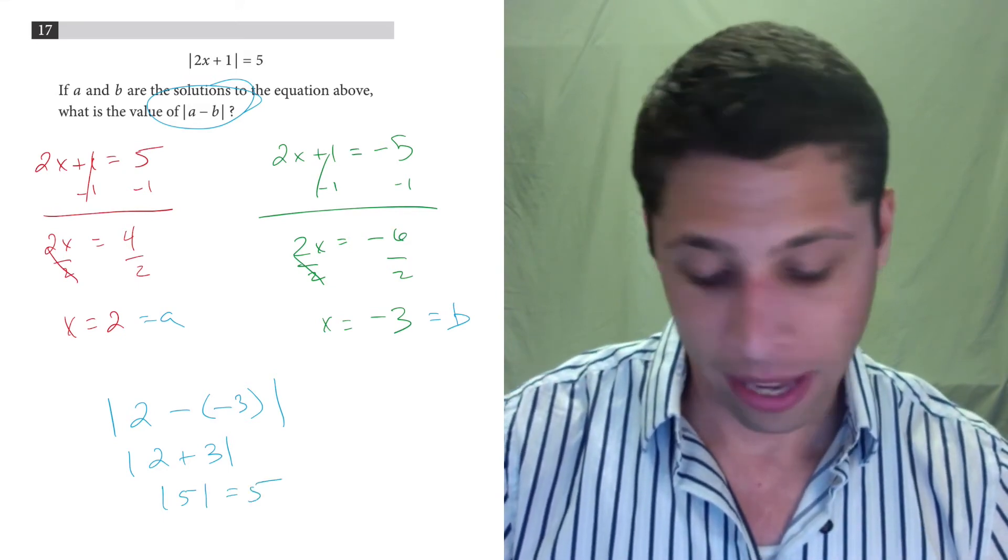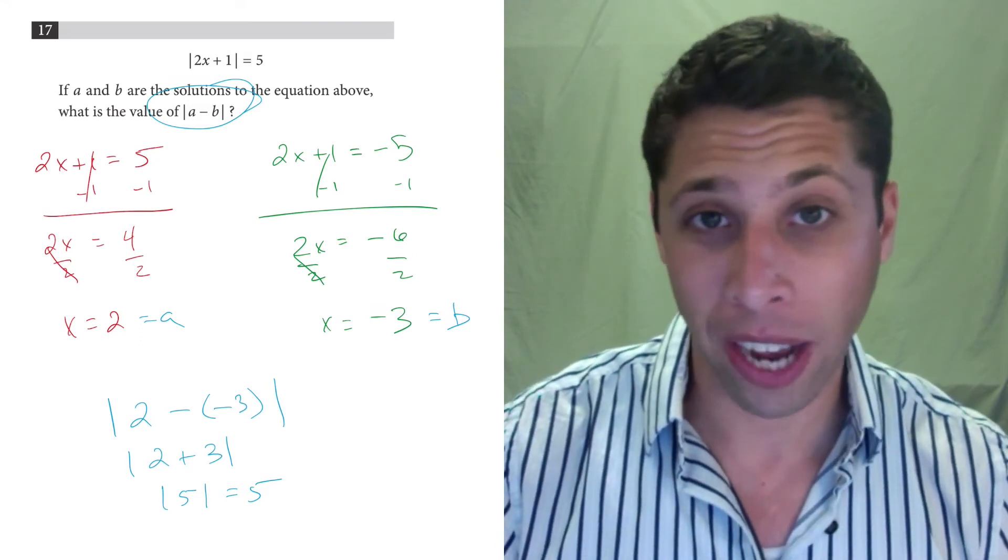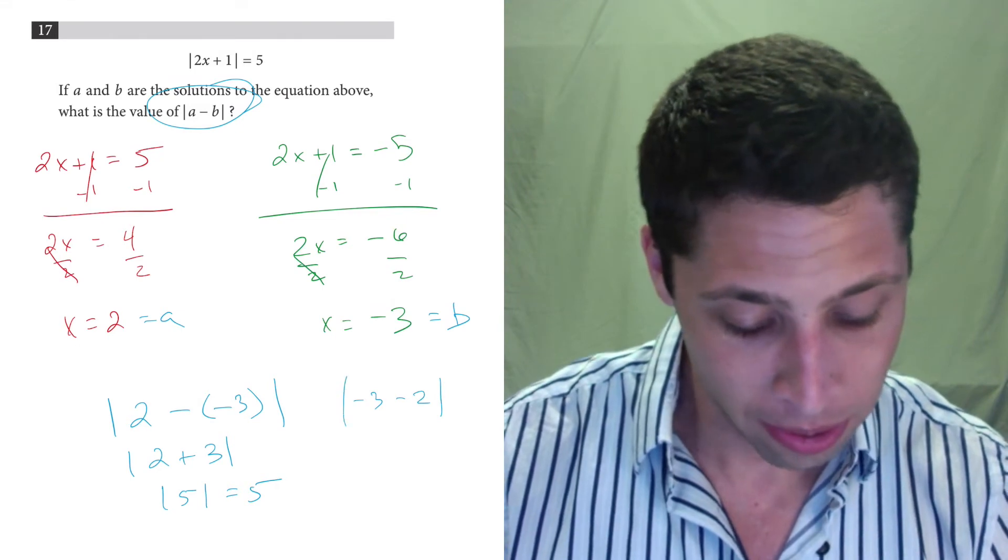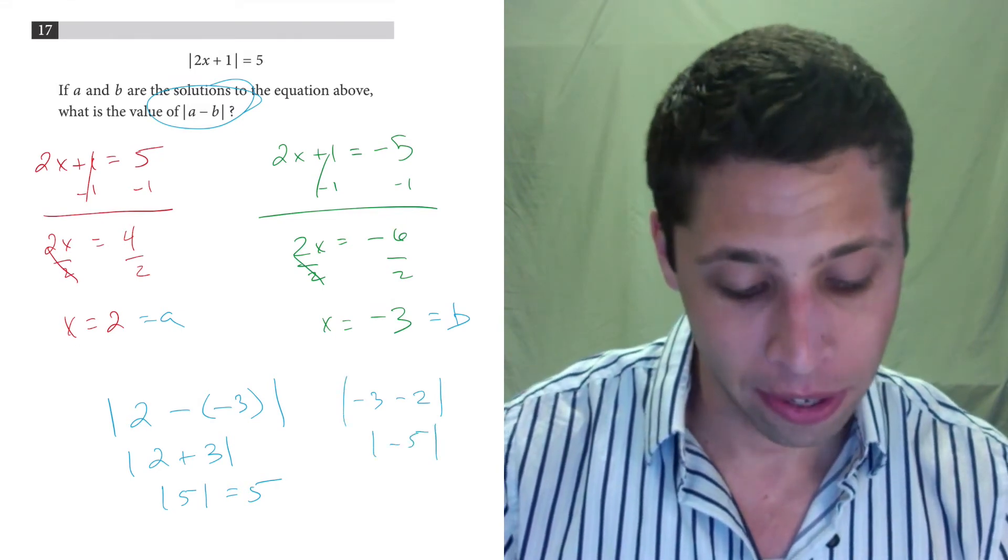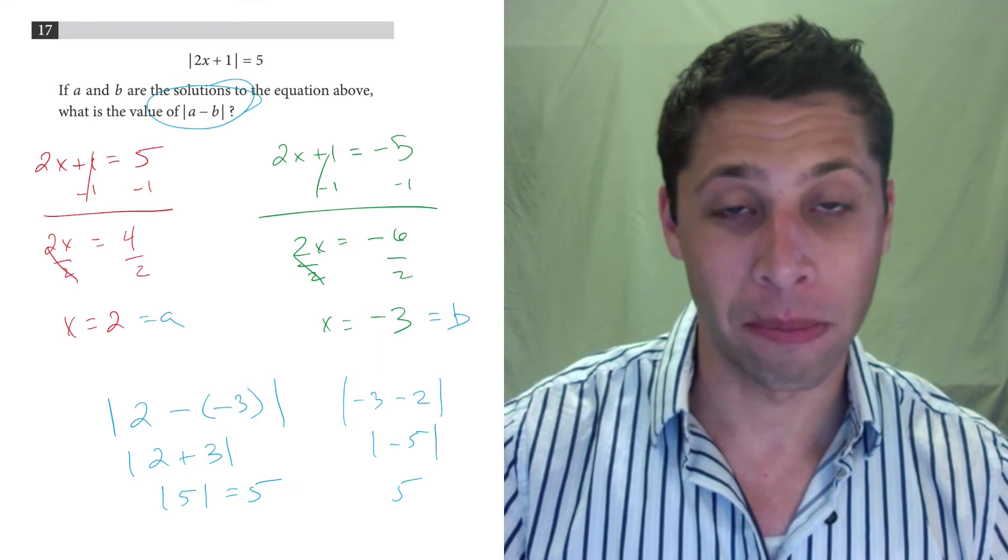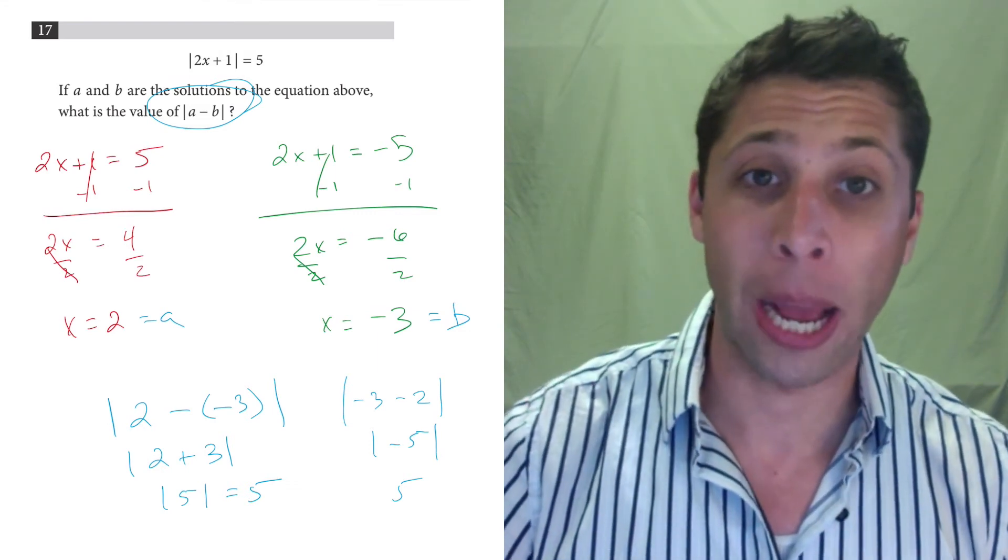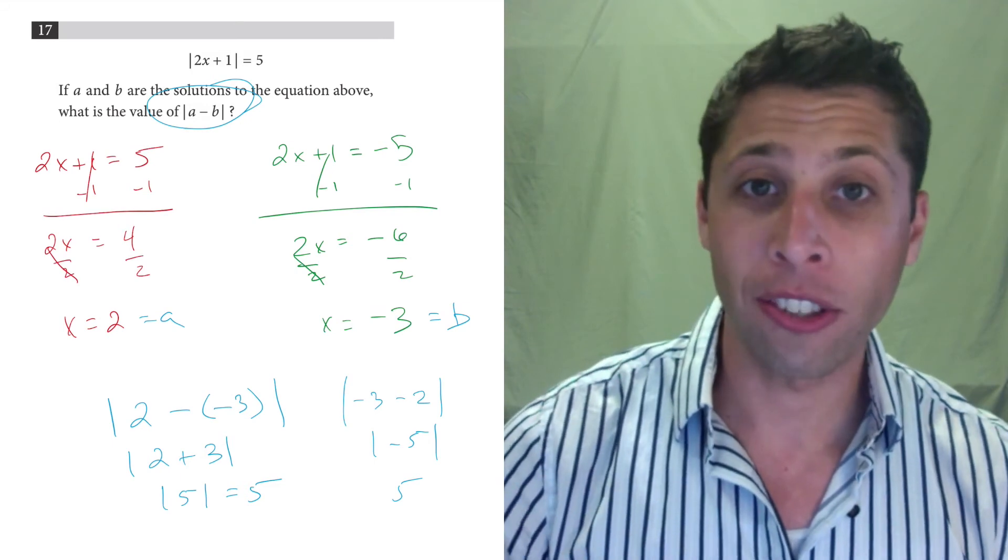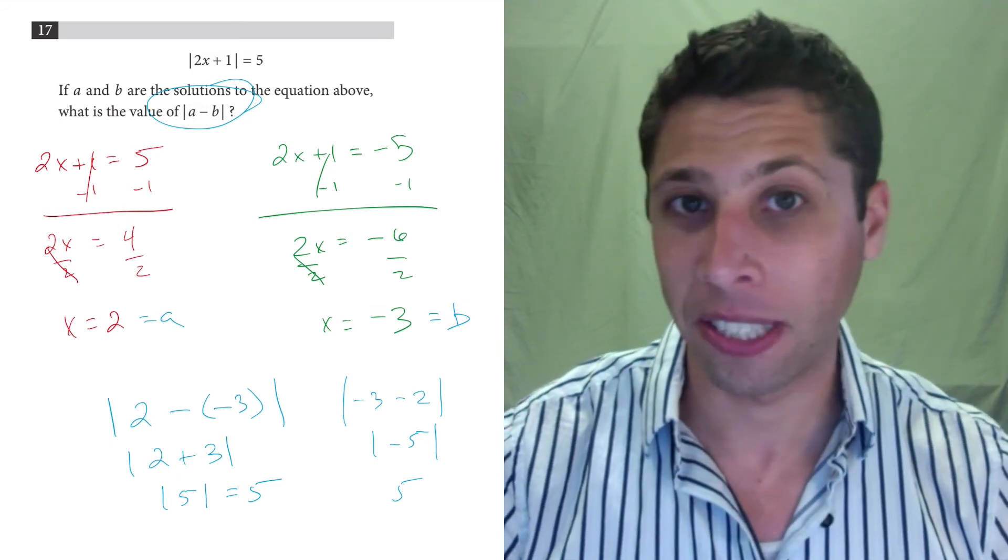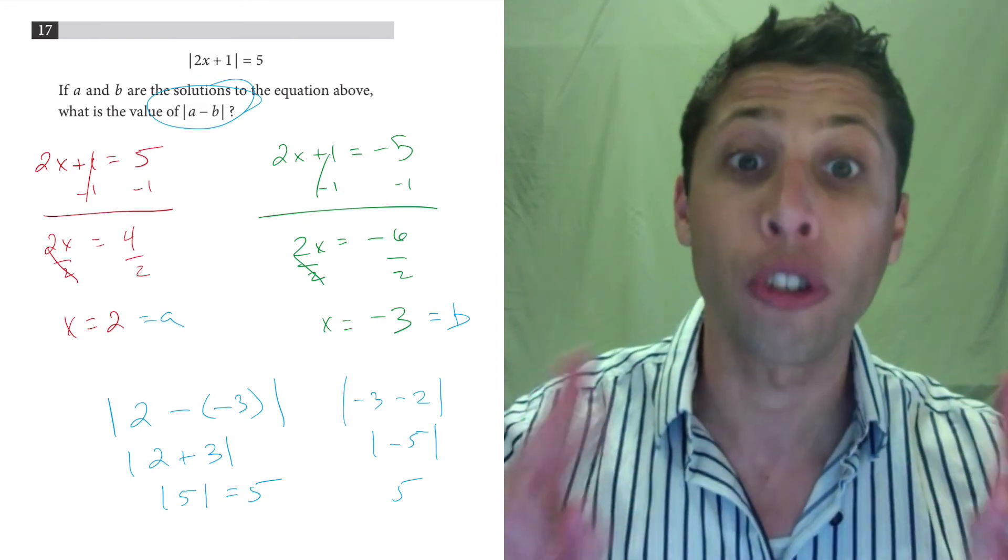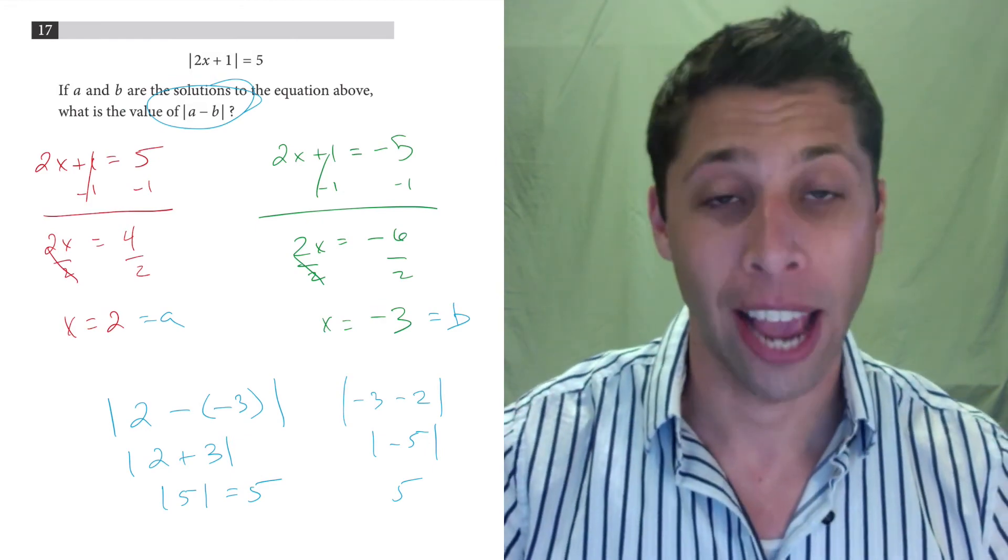That's it. If we had done it the other way, we still would have gotten 5 because we would have had negative 3 minus 2, which is negative 5, which is 5. So there you go. It doesn't matter. But this is a good question, really just testing whether or not you understand what absolute value is. Hopefully you are now reminded of it if you got it wrong, and you should be able to get it right next time just by creating those two equations, the positive one and the negative one.